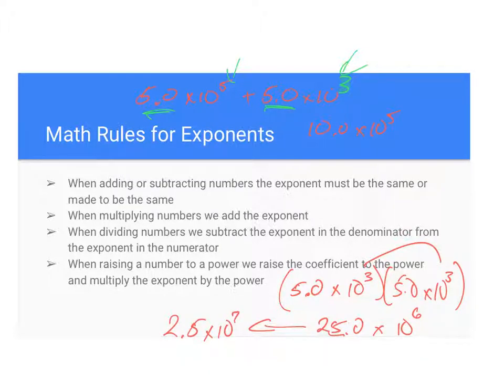And then actually we can move that over one more and that ultimately ends up being 2.5 times 10 to the seventh. Dividing, we divide the coefficient and then subtract the exponents. And then when we raise a number to a number to a power, we raise the coefficient to the power and multiply the exponent by that power.